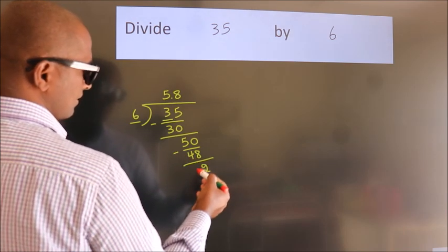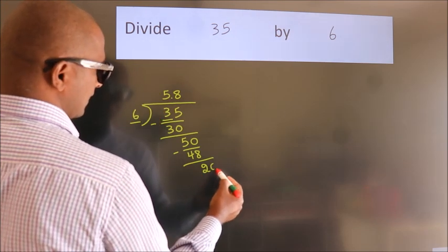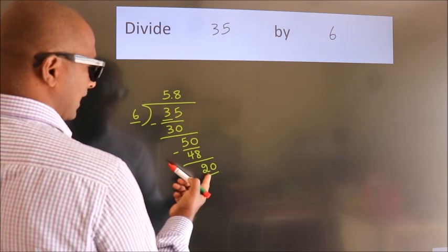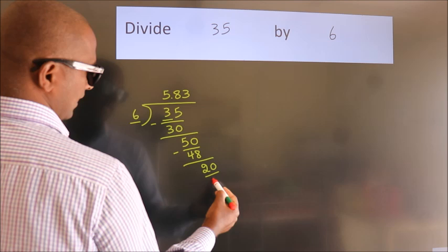After this, we already have the decimal, so directly take 0. So 20. A number close to 20 in the 6 table is 6 threes, 18.